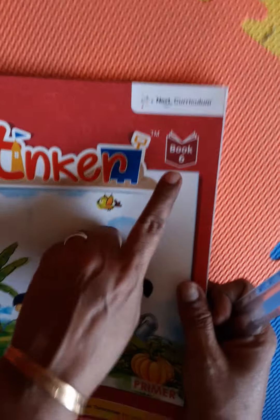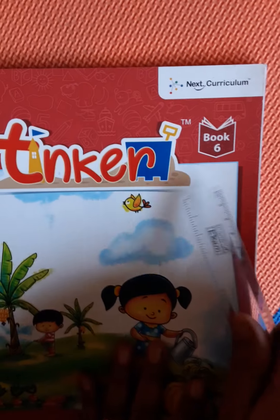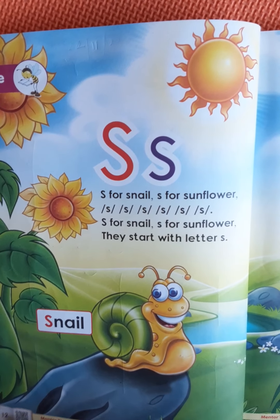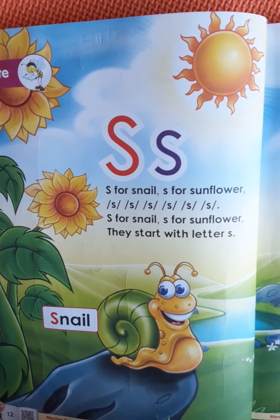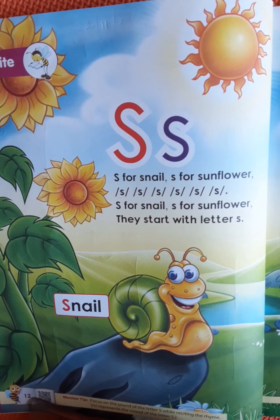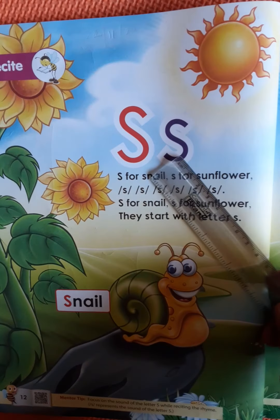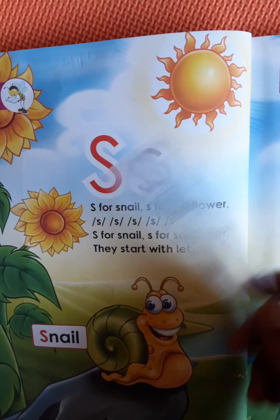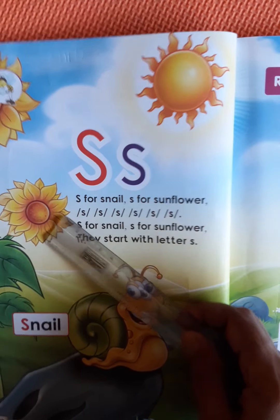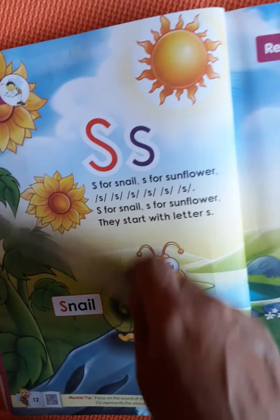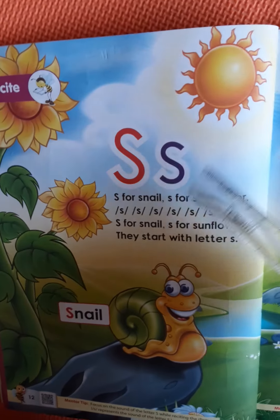So we have to get ready with Tinker Book 6. You have to open to page 1 to 12. Over here you see the picture of a sun, sunflower, snail — all related to letter S.